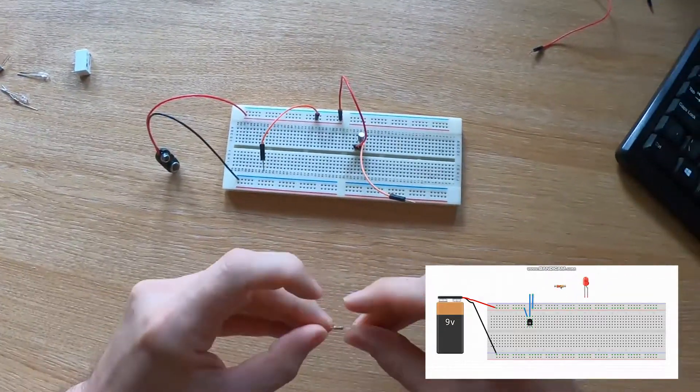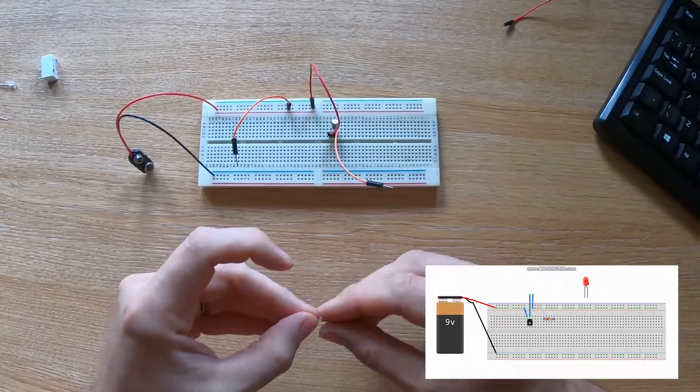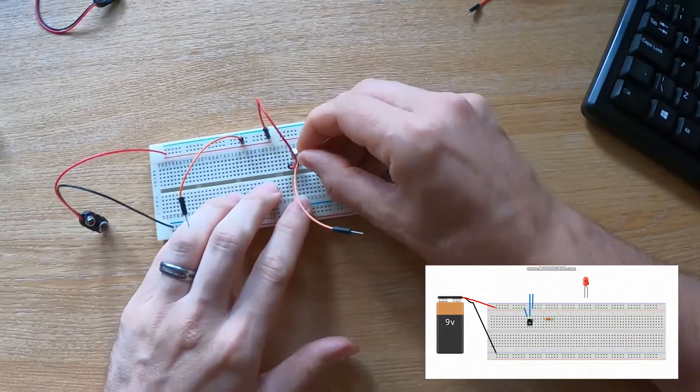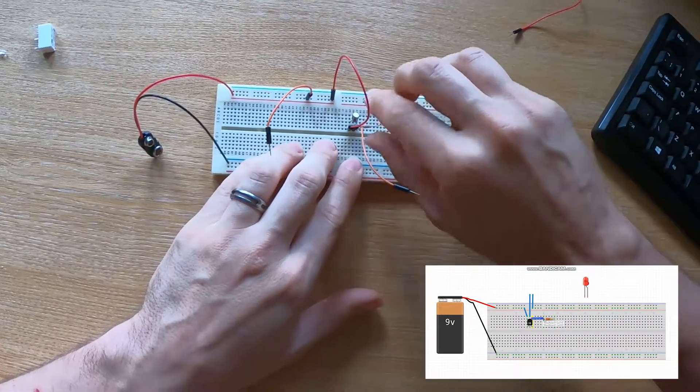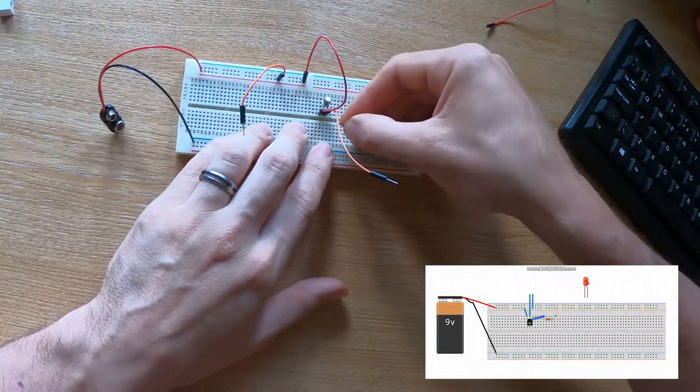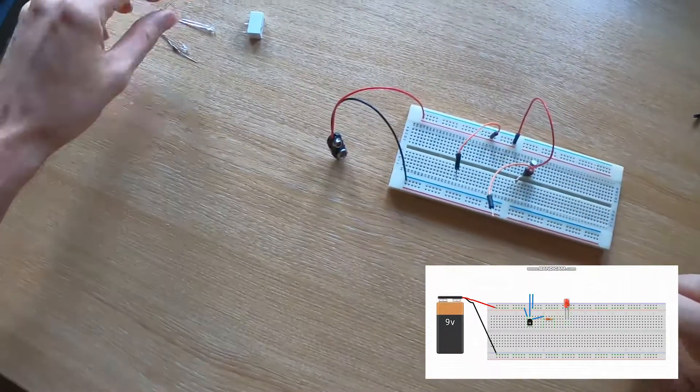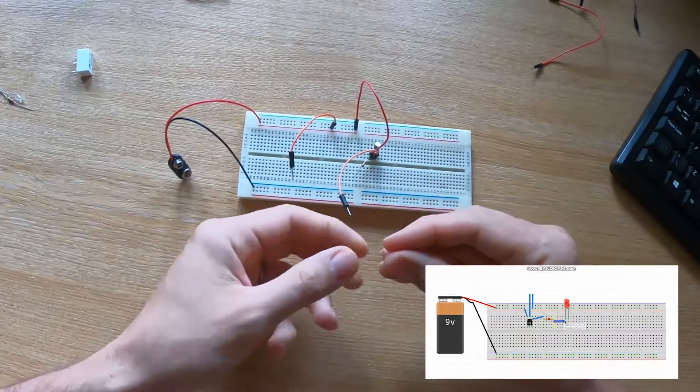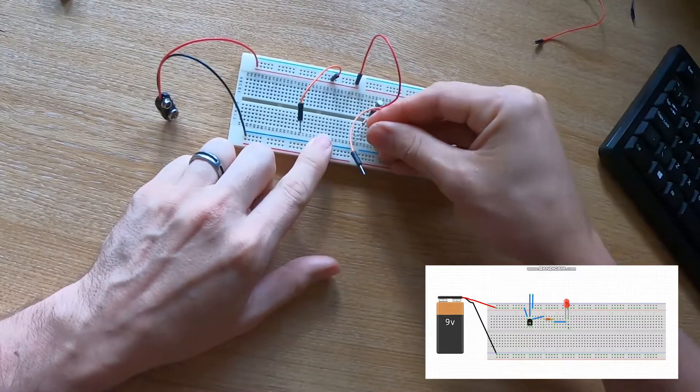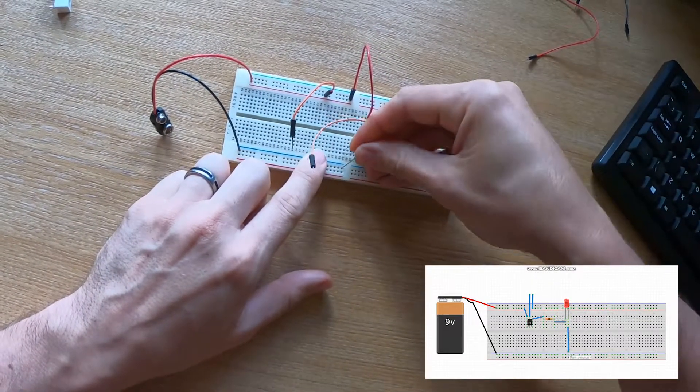And then all we've got to do is add a resistor. So this is a 220 ohm resistor, not quite enough for what we want, but we'll run the resistor over here to this side of the breadboard and then we'll run an LED from there to our negative line.